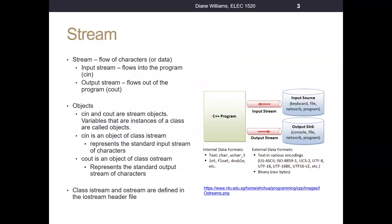We've been working with streams since the beginning — we've been working with cin and cout. A stream is defined as information or characters flowing into the program. In our case, cin has been tied to the keyboard, so when we type things and use cin to read that information in, it comes into the program. When we use cout, that is tied to the output stream that goes out to our console terminal window.